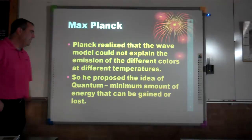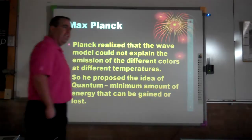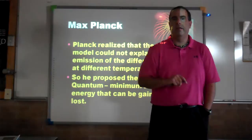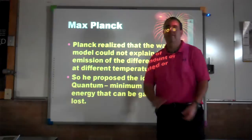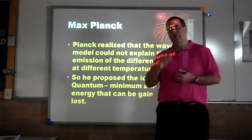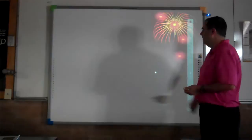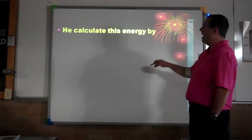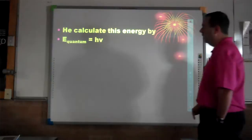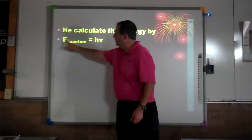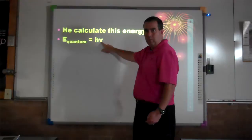Quantum was the minimum amount of energy that can be gained or lost — it's not waves anymore, it's energy. He looked at different amounts of energy: room temperature has less energy than an orangish-red flame, and a really hot flame turns blue. He said we need to calculate the energy needed to give off those different colors. Quantum energy E equals Planck's constant h multiplied by frequency v.